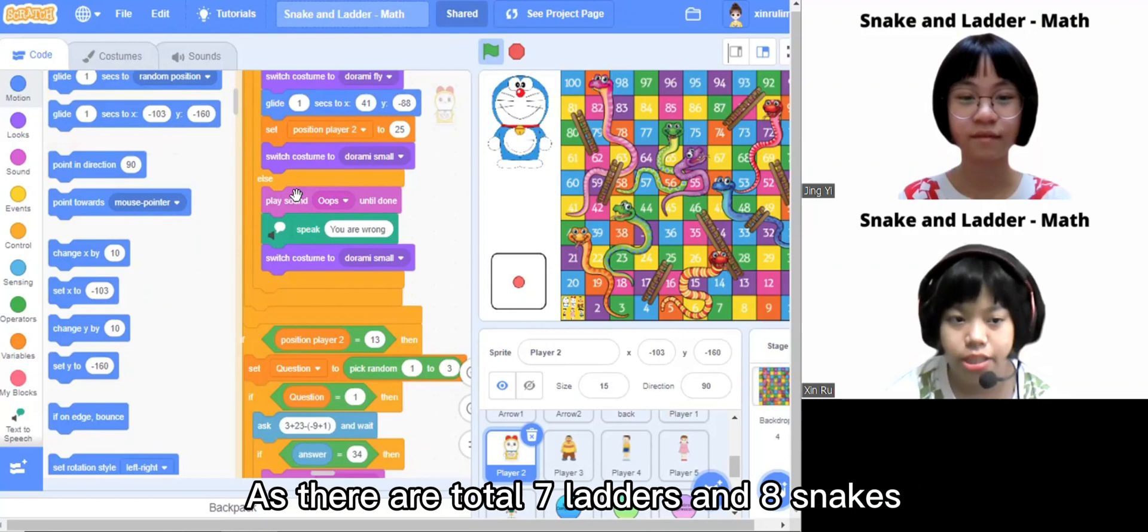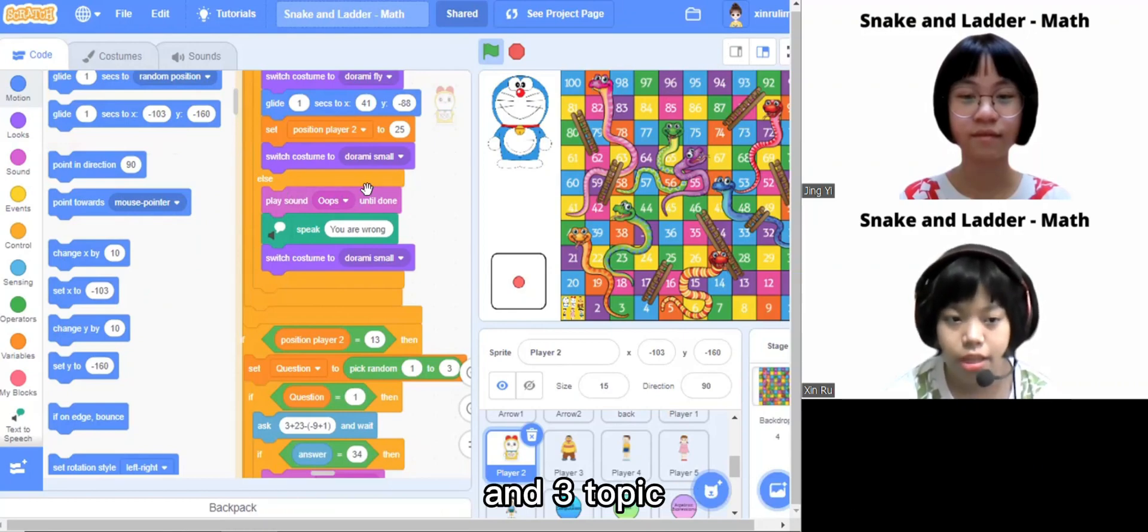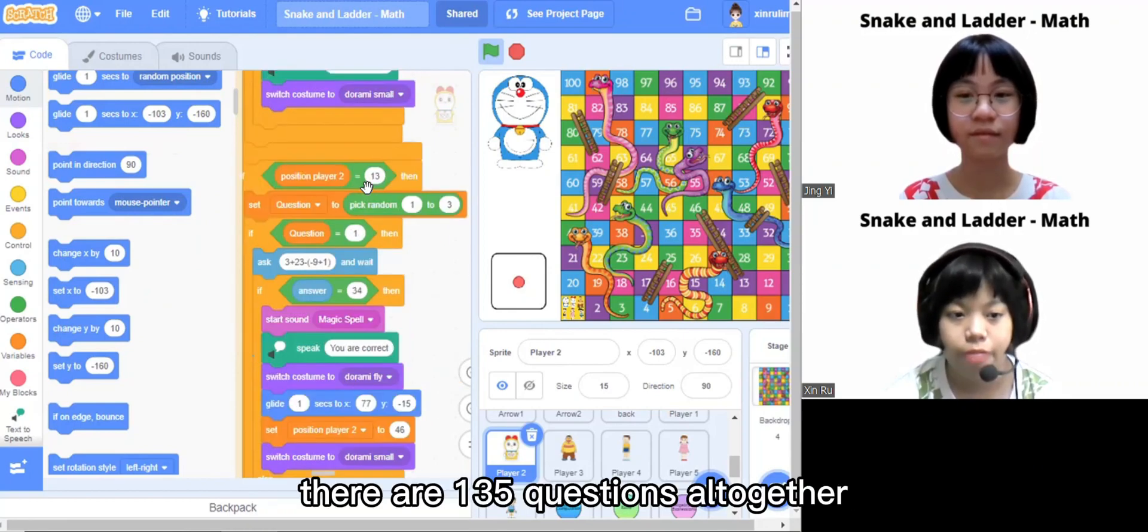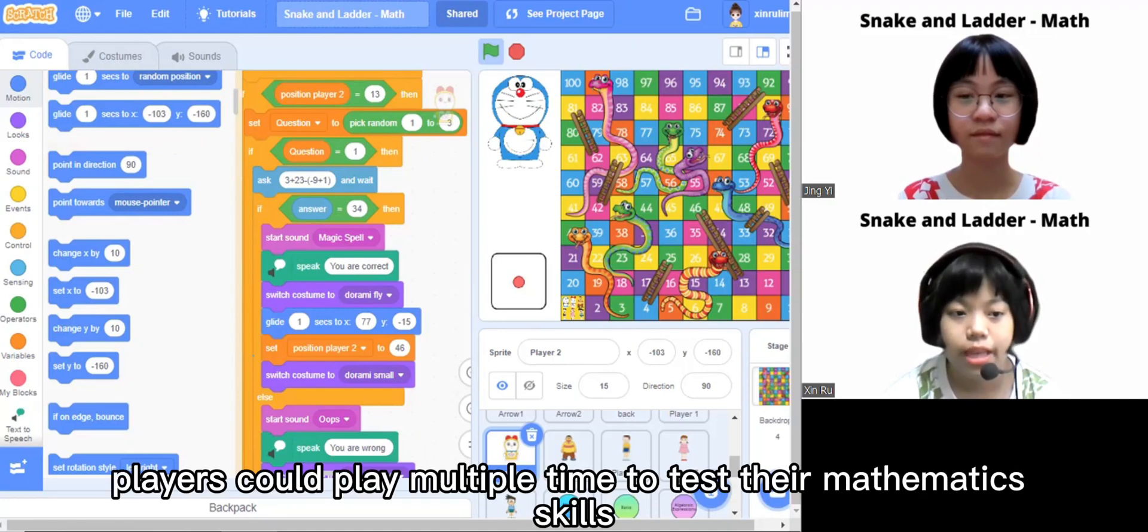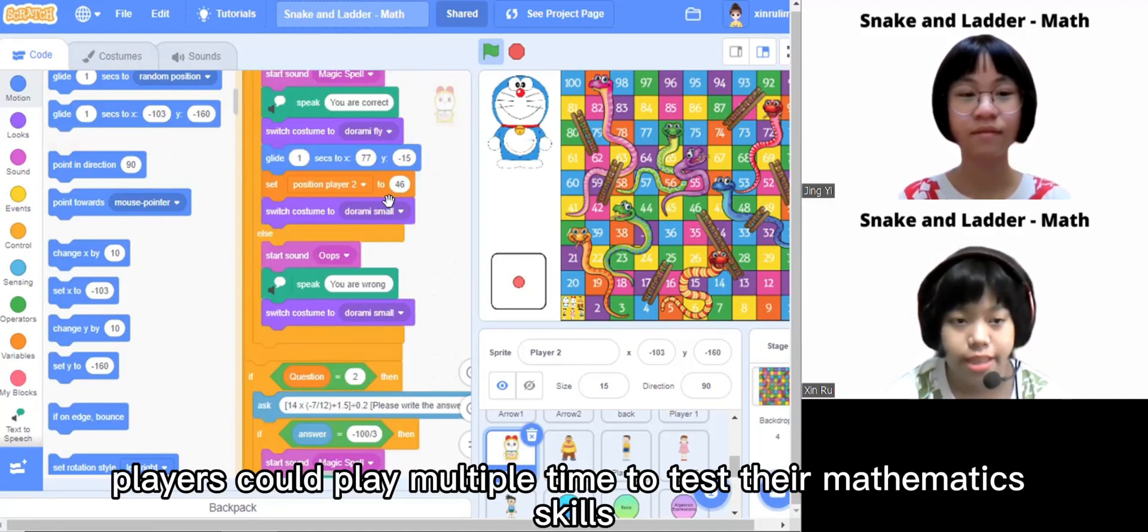As there are total 7 ladders and 8 snakes and 3 topics, there are 135 questions all together. Player could play multiple times to test their mathematics skills.